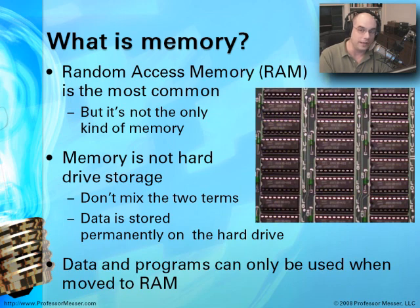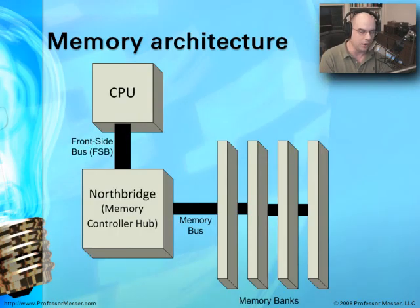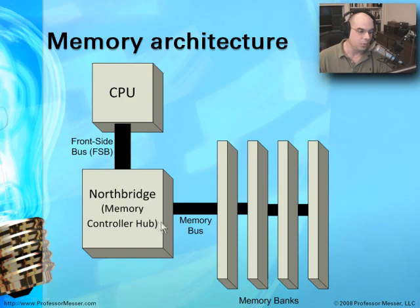To view a movie, surf the web, or play solitaire, you have to have that data in random access memory. Let's talk about how memory works. If you've gone through our other course materials on computer architecture and CPUs, this memory architecture should look familiar. I've taken the section with the CPU, the north bridge — or what we call today the memory controller hub — and a representation of memory banks.